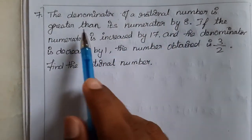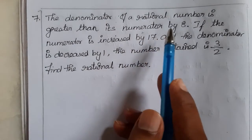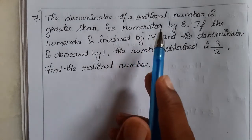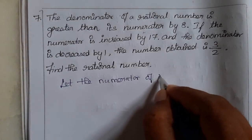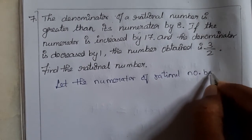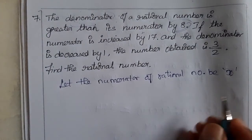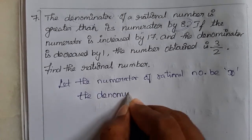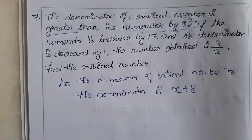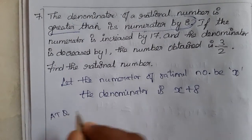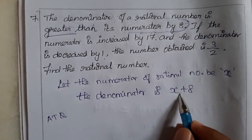Next word problem: the denominator of a rational number is greater than its numerator by 8. A rational number is in the form p by q — numerator and denominator. Let the numerator be x. Then the denominator is x plus 8 (greater than the numerator by 8). According to the question, if the numerator is increased by 17 (x plus 17) and the denominator is decreased by 1 (x plus 8 minus 1), the number obtained is 3 by 2.